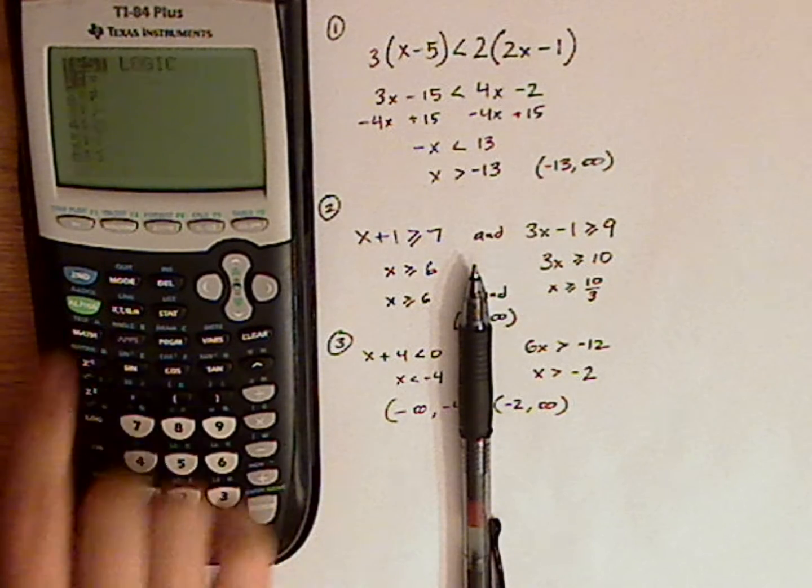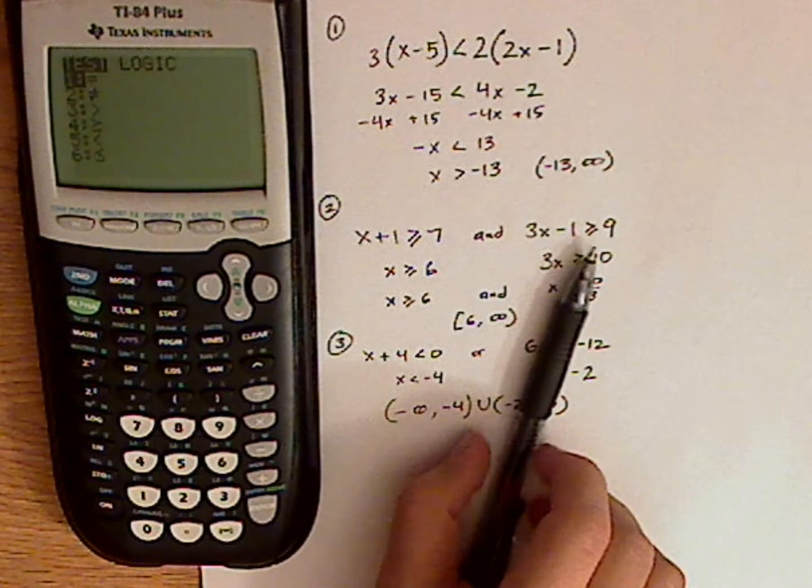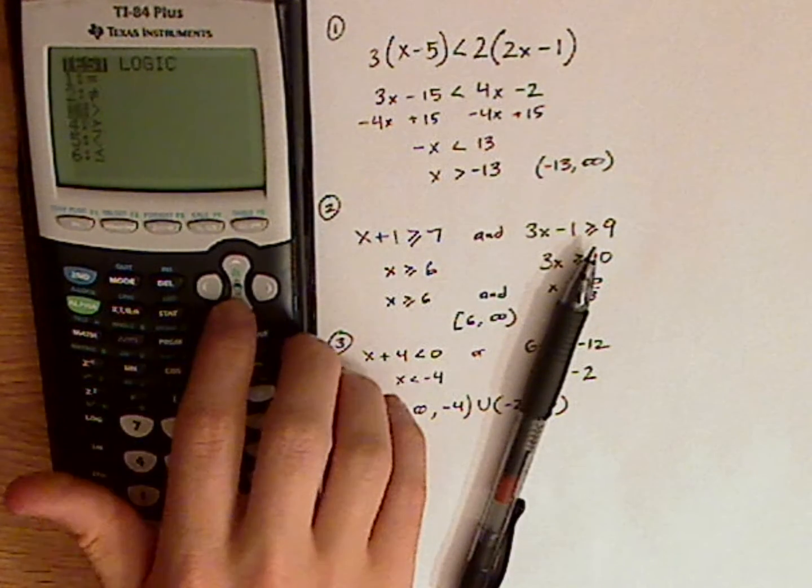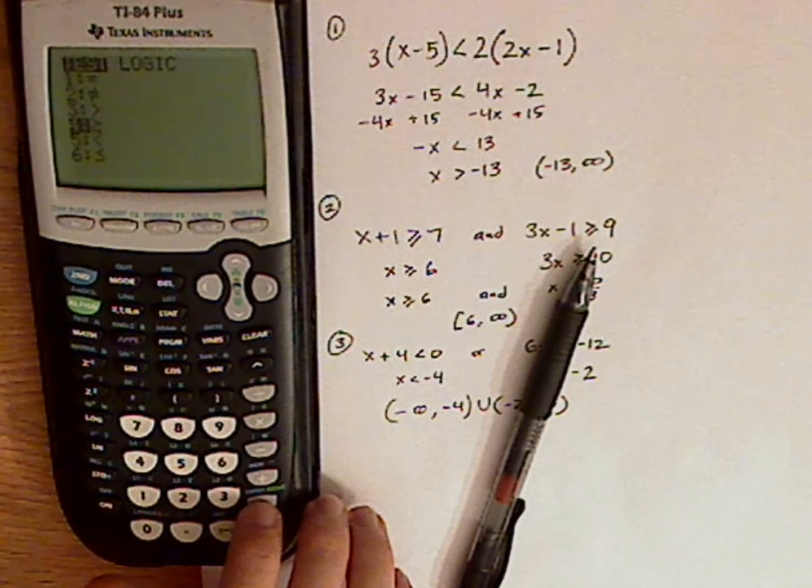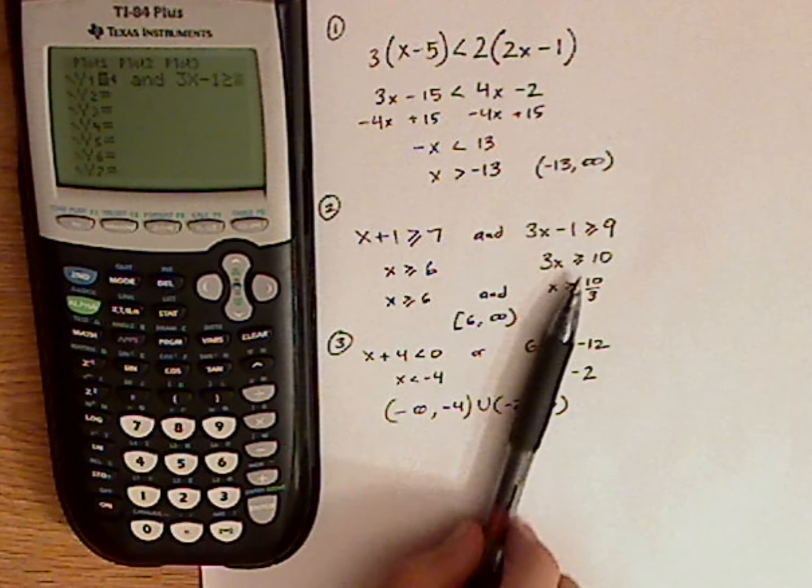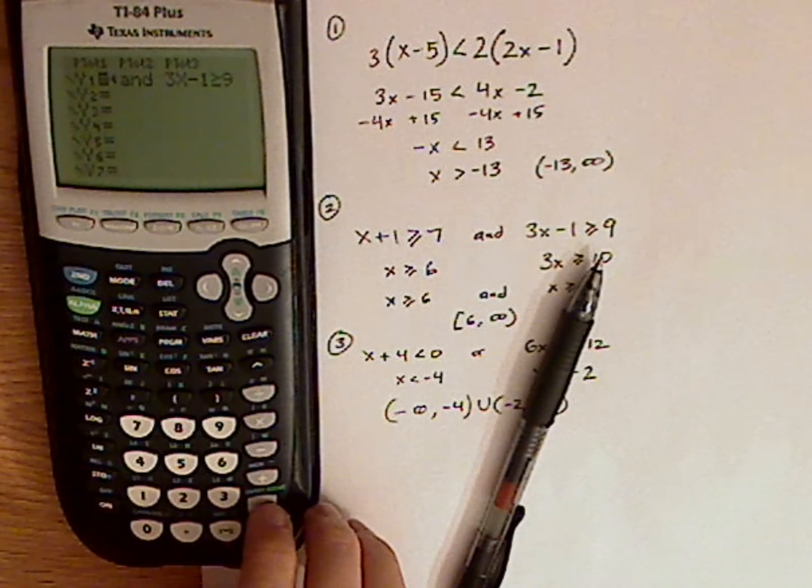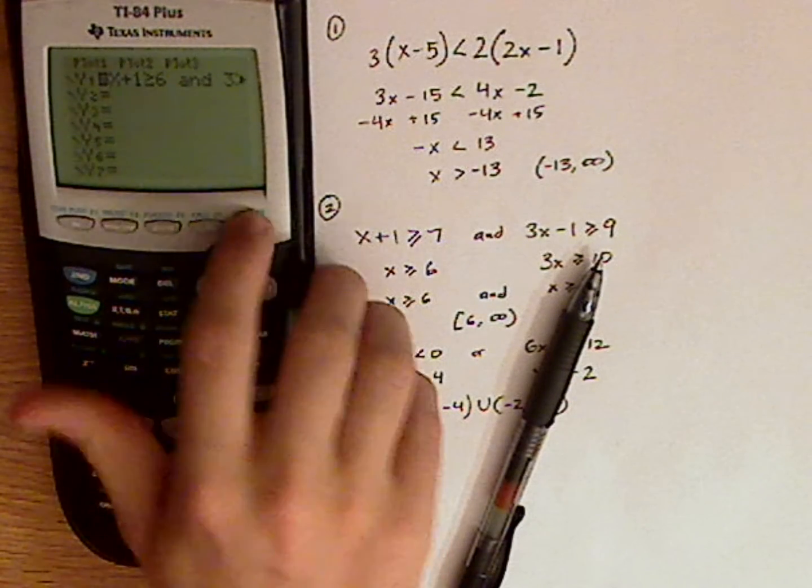Then you have 3x minus 1. Second, I'm going to push tests. I need it for greater than or equal to again. And that's 9. Then I'm going to graph.